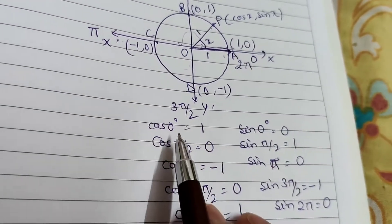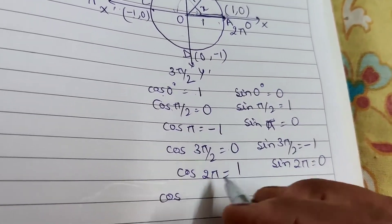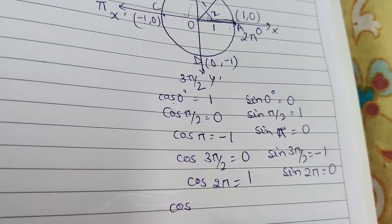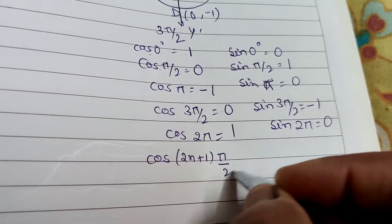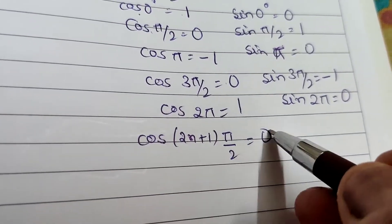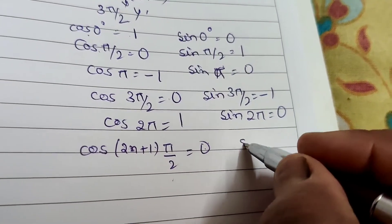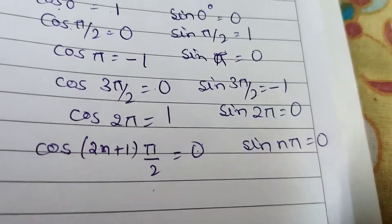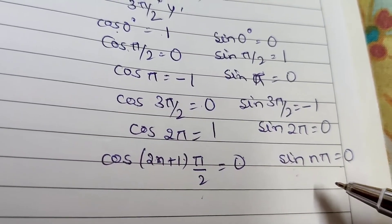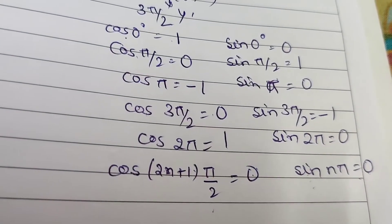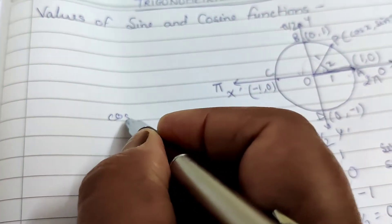We can observe that cos(π/2) = 0, cos(3π/2) = 0, so the general form is cos(2n+1)π/2 = 0 for integer n. If n=0, we get π/2; if n=1, we get 3π/2, and so on. Similarly, sin(nπ) = 0 is the general form — sin π = 0, sin 2π = 0, sin 3π = 0, and also sin(-π) = 0, sin(-2π) = 0, sin(-3π) = 0.